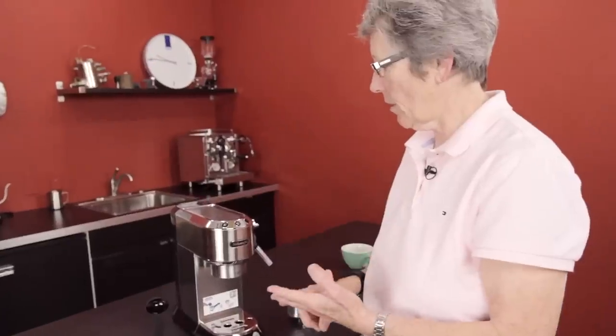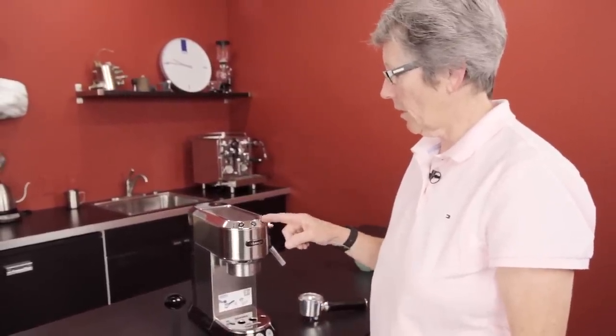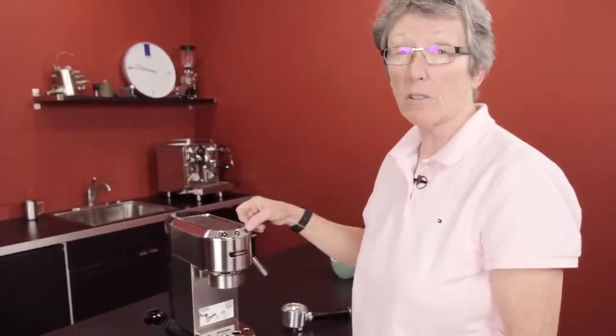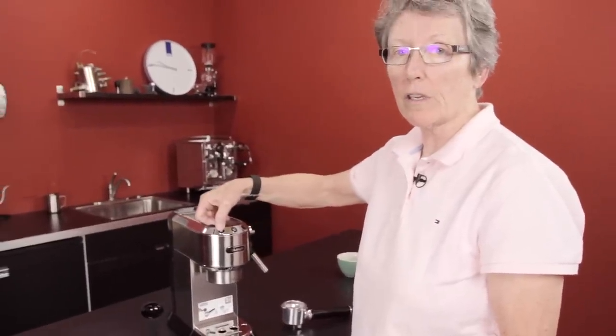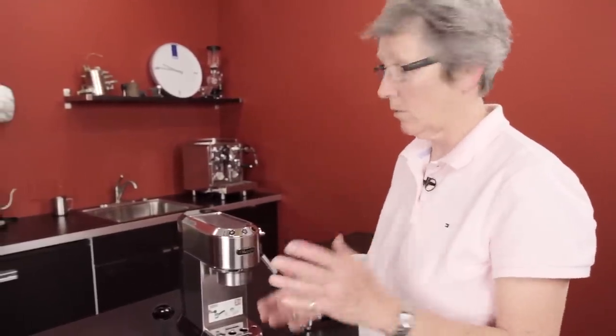So temperature, on-off, descale. The other thing that you can also program is the volume of your shots. You don't have to get into the steam button to do that. You just simply hold the button on until it starts flashing. Brew until you've got what you want. Push the button again. And now it's programmed the next time to do that same thing.